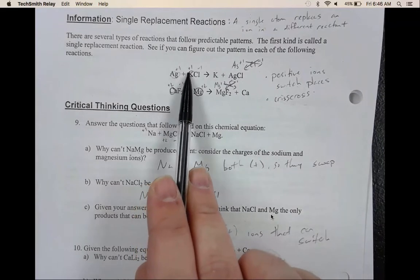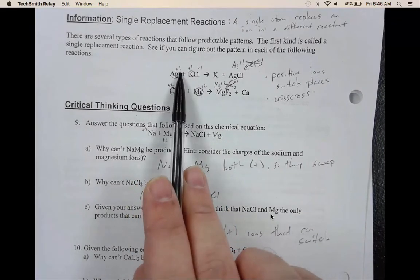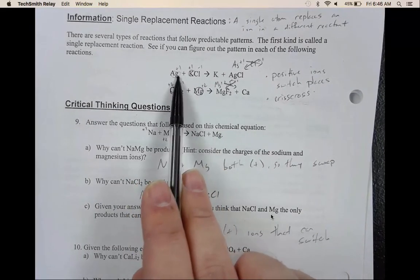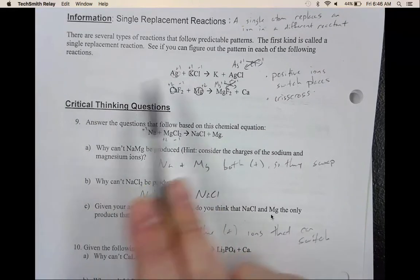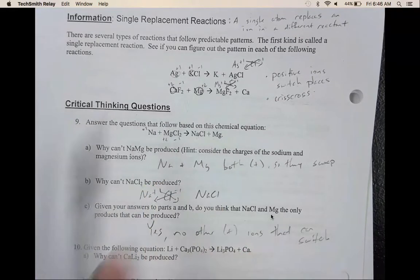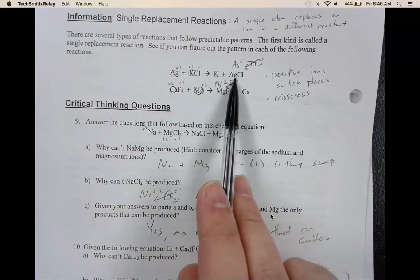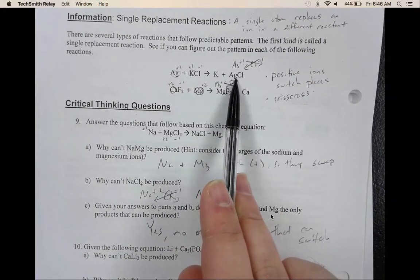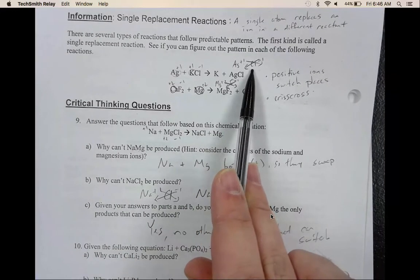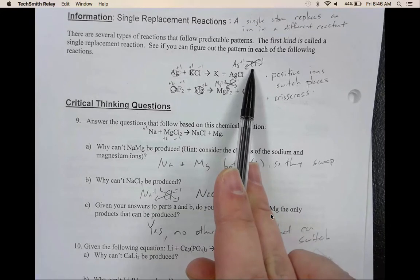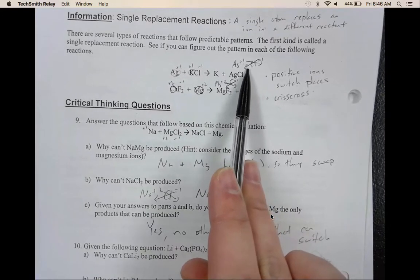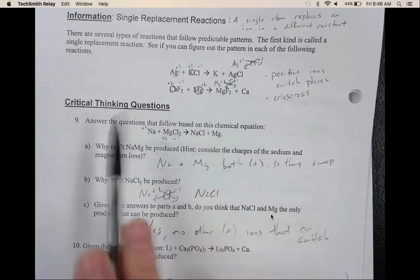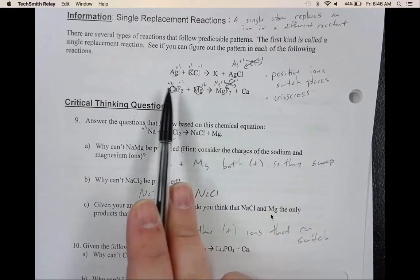So you can see, I started off by labeling all of the charges. As we can tell, the two positives will change because they are the same charge. So the silver and the potassium trade places. When you bind the silver and the chlorine, make sure you crisscross. Crisscrossing, make sure we have a balanced formula, that it's neutral. So the crisscross is important. That's why it's AgCl.